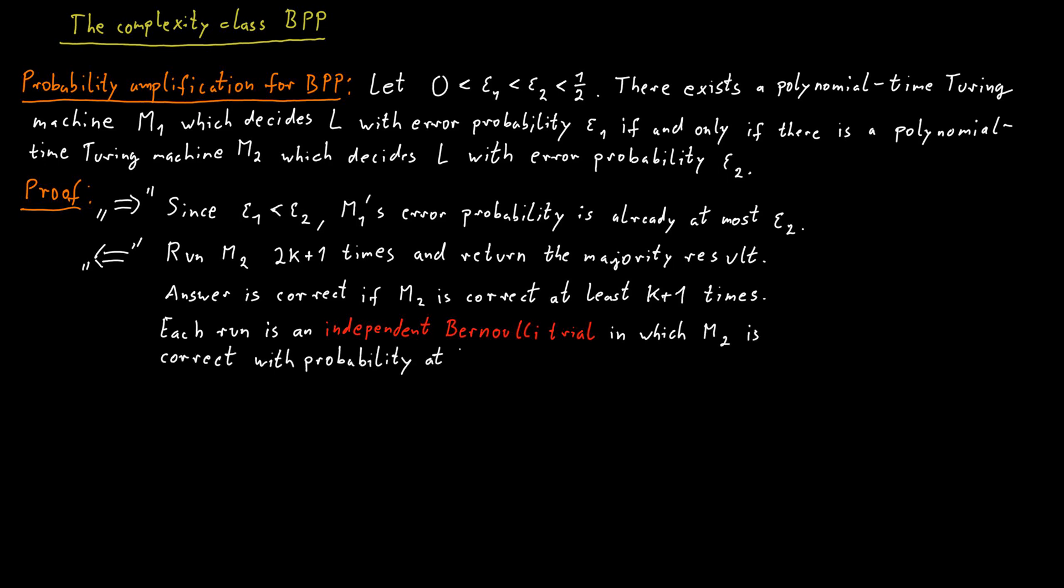Each run of this machine M2 is what we call an independent Bernoulli trial in which M2 is correct with probability at least 1 minus epsilon 2. Remember epsilon 2 is the error probability. So the probability to be correct is 1 minus epsilon 2 at least.